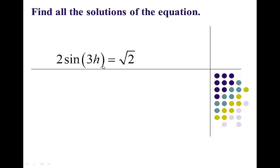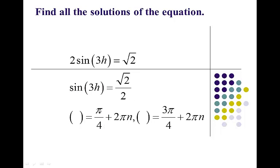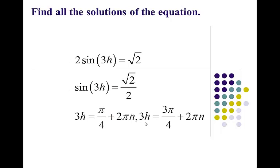Now this one says 2 sine 3h equals square root of 2. The first thing we've got to do is isolate the function — you can't do anything about the 3, please don't factor the 3 out, just leave it. Divide both sides by 2 and you get sine of I-don't-care equals square root of 2 over 2. I'm thinking 45 degrees in quadrant 1 and 45 degrees in quadrant 2. The period for sine is 2 pi. So I put 3h in: 3h equals pi over 4 plus 2 pi n, and 3h equals 3 pi over 4 plus 2 pi n.